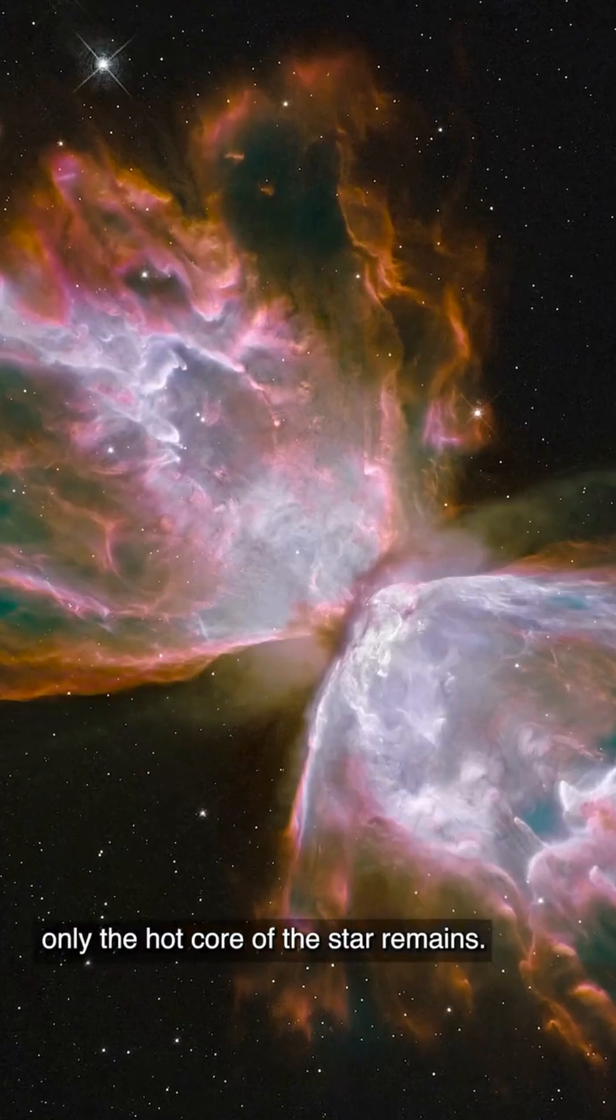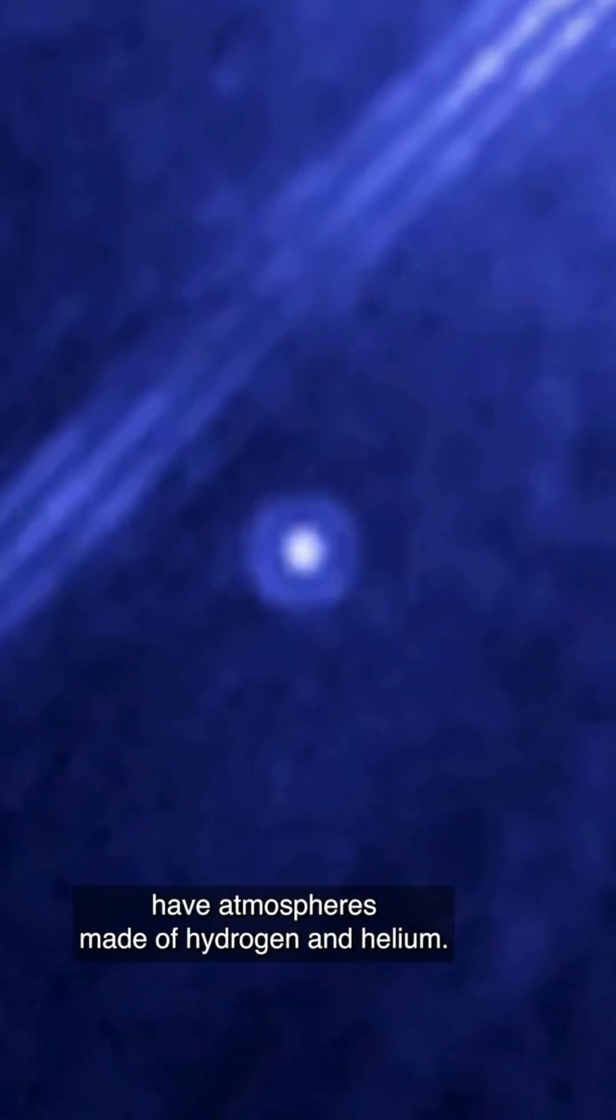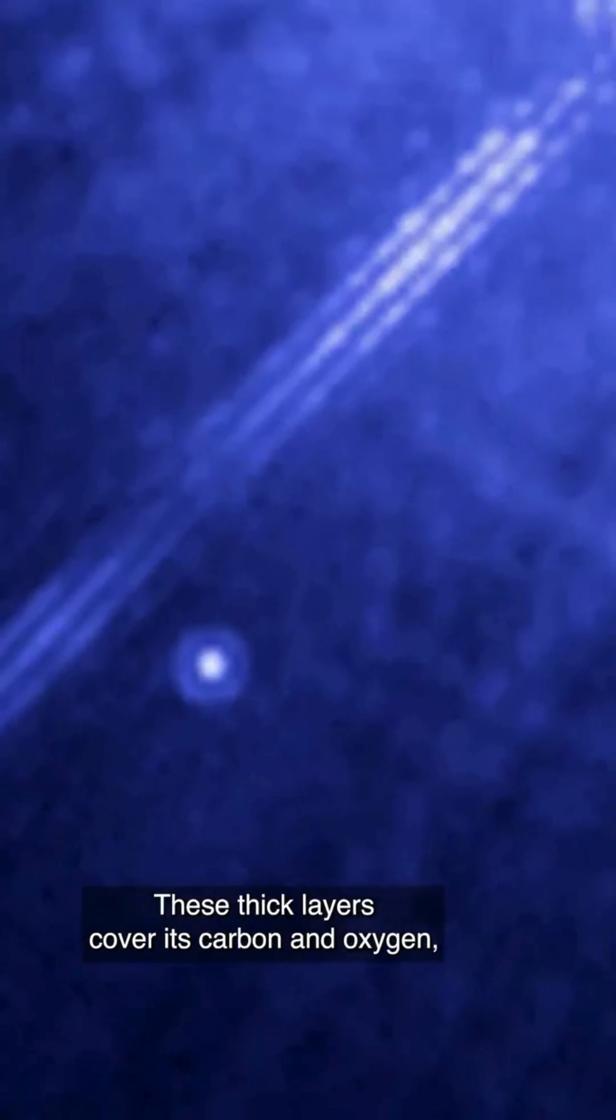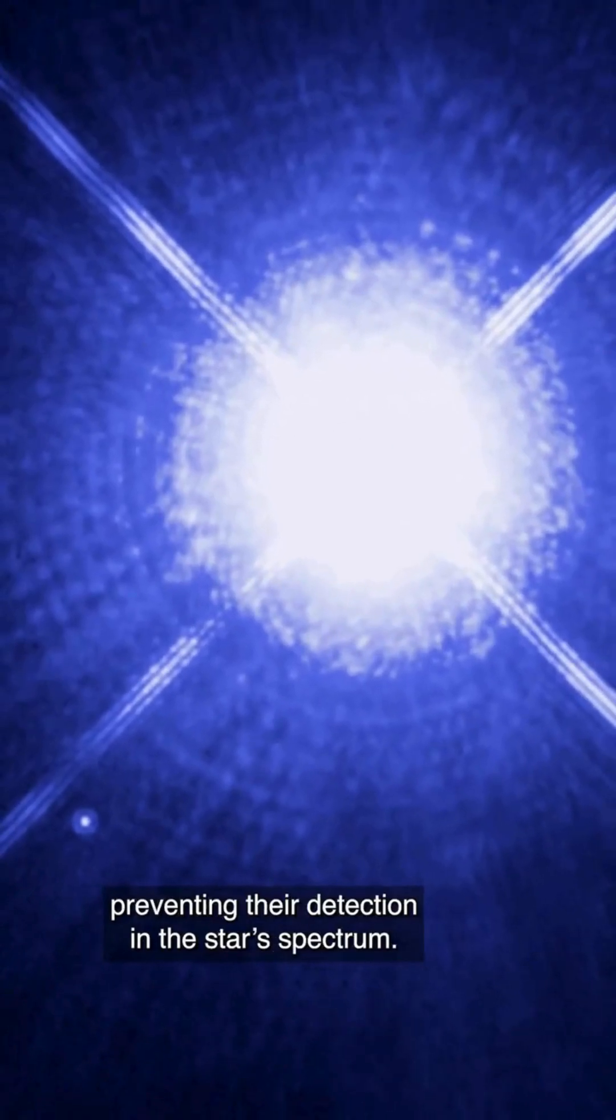Only the hot core of the star remains. White dwarfs that form from a single star usually have atmospheres made of hydrogen and helium. These thick layers cover its carbon and oxygen, or oxygen and neon surface, preventing their detection in the star's spectrum.